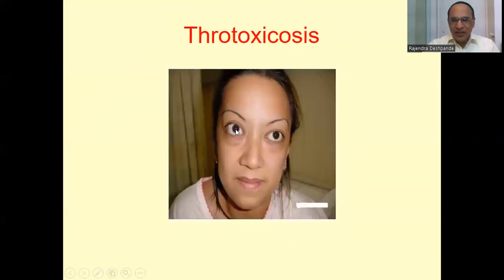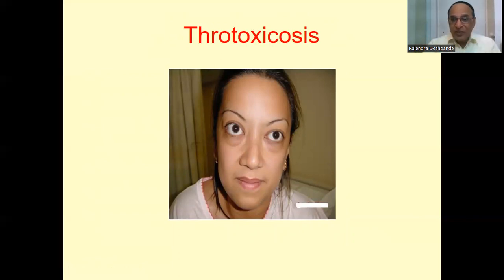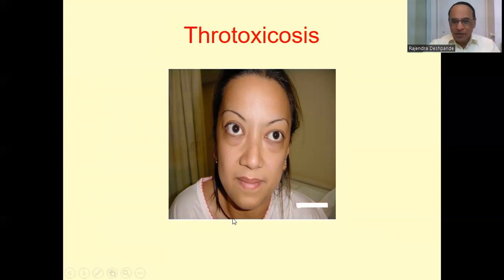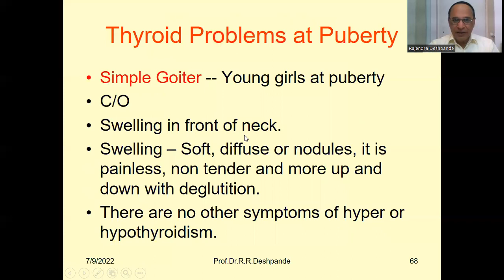Here you can see a typical feature — exophthalmos — where the eyes are bulging out. That is a feature of goiter, and is a characteristic feature of goiter or hyperthyroidism. Here you can see the thyroid gland is also enlarged. This bulging of the eyes is a typical feature.